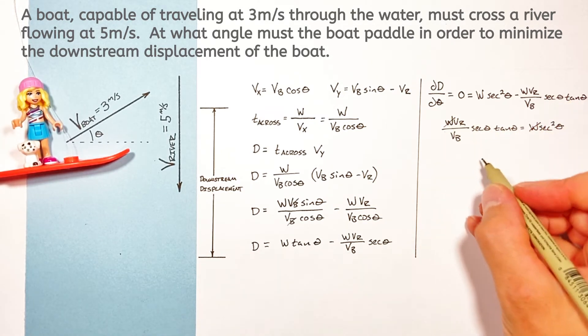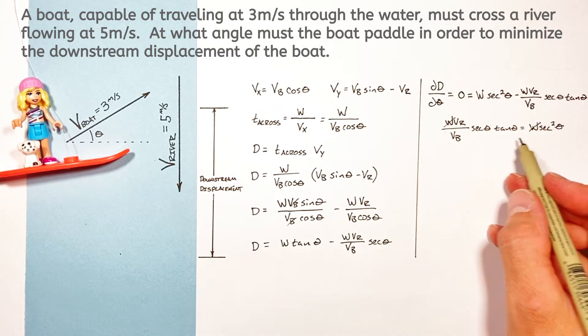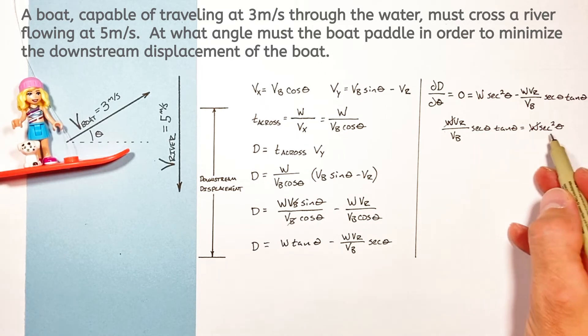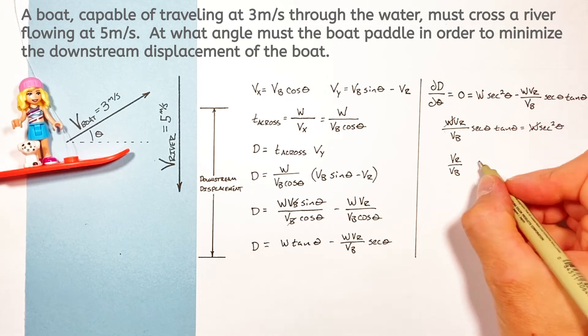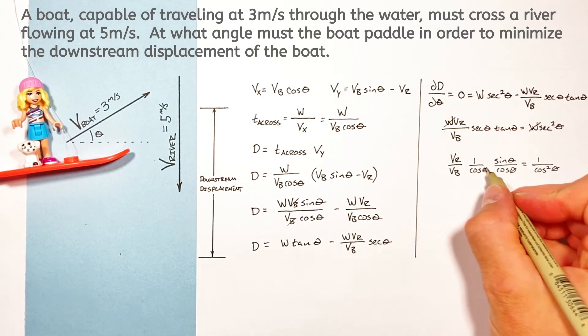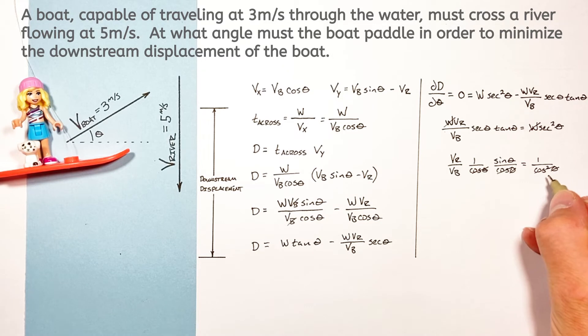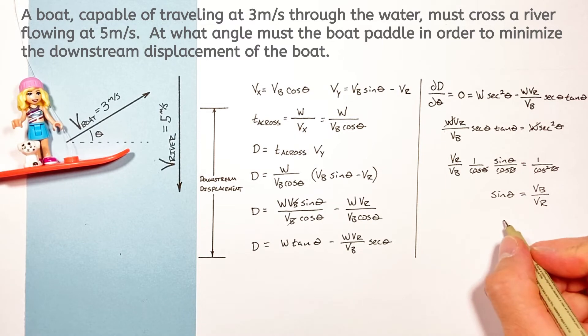I'm also going to expand out these secants and tangents into trig functions we're more comfortable with like sine and cosine and you'll see this cosine theta squared cancels out on both sides. This leaves us with this term or rearranging it for theta we'll get.